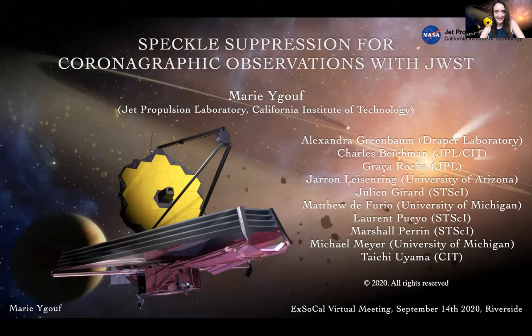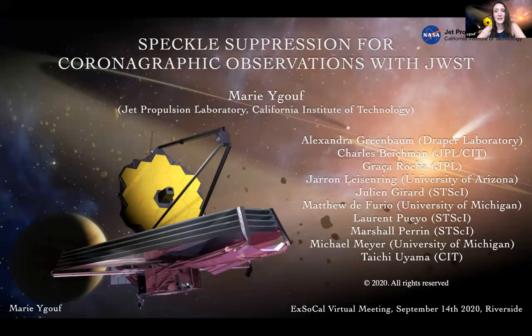Thank you for having me today. I'm a recent hire at JPL working as a technologist on the Roman coronagraph instruments. Today I'd like to talk about a research and technology development project funded as part of fiscal year 2020 at JPL. This project is called Speckle Suppression for Coronagraphic Observations with the James Webb Space Telescope, and the idea is to further develop the technique of post-processing based on a model of instruments that I developed as part of my PhD project, and to implement this technique on JWST.